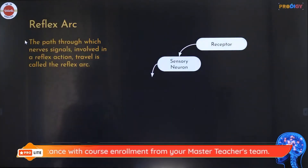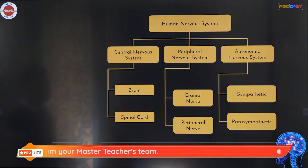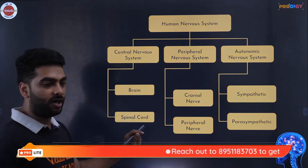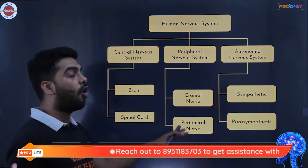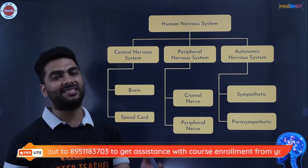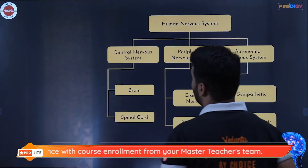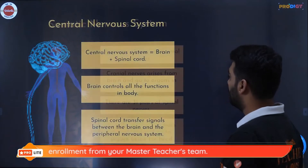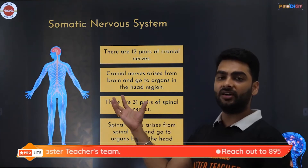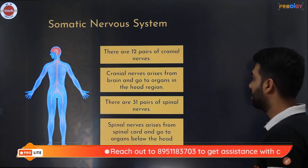In the reflex arc you have the receptor, the sensory neuron, the interneuron or relay neuron, the motor neuron, and the effector. Your human nervous system is divided into the central nervous system — which includes the brain and spinal cord — the peripheral nervous system, which forms all the nerves including 12 pairs of cranial nerves and 31 pairs of spinal nerves, and the autonomic nervous system with its sympathetic and parasympathetic divisions. Cranial nerves originate from the brain and spinal nerves from the spinal cord.